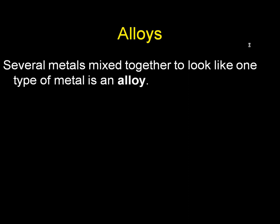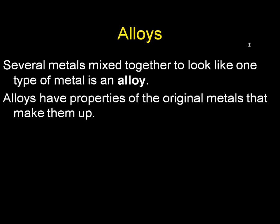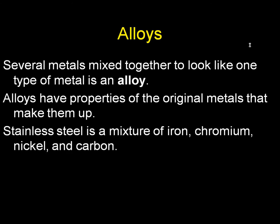Alloys are several metals mixed together to look like one metal, and they have the properties of the original metals. Stainless steel is one example — it's a mixture of iron, chromium, nickel, and carbon in various proportions.